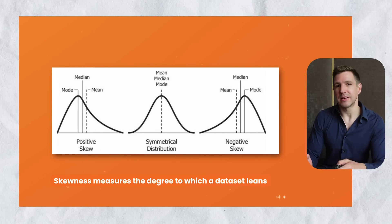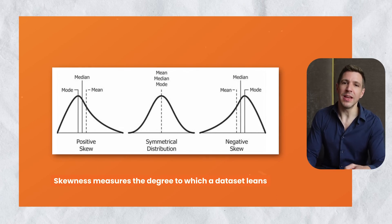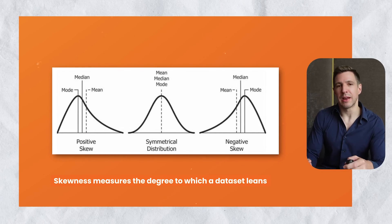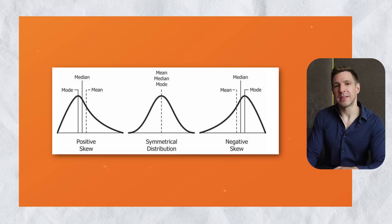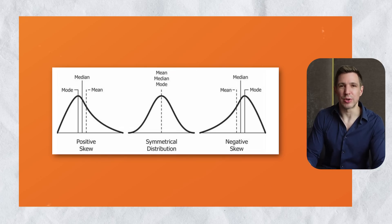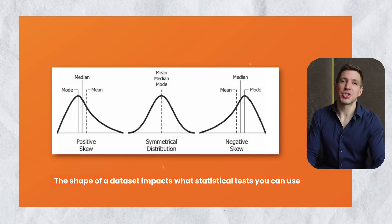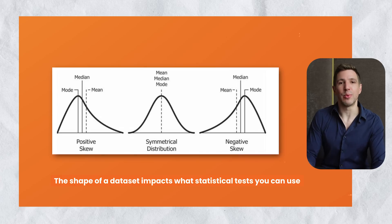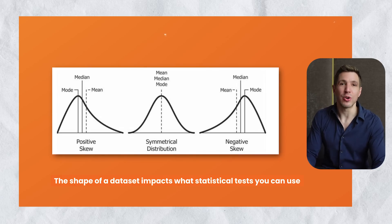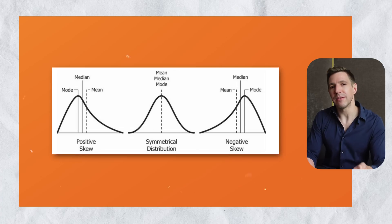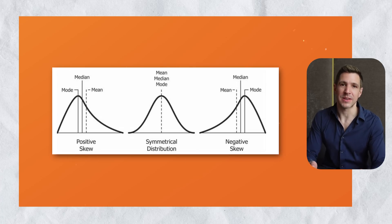If you look at these three distributions, you can see how different mean, median, and mode combinations will affect the skew or the shape of a distribution. The shape of your data is really important because it will impact what you can and can't do in terms of inferential statistics, so be sure to pay very careful attention to the skewness statistic whenever you're looking at a dataset.